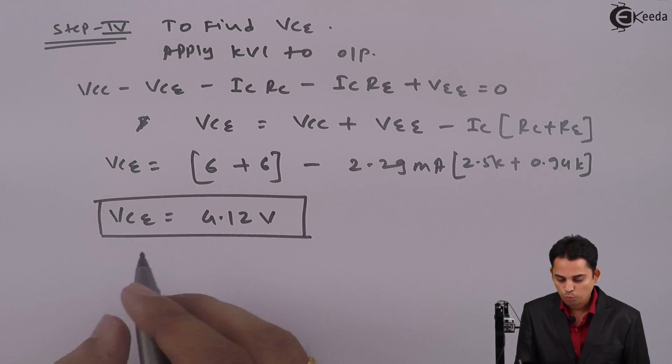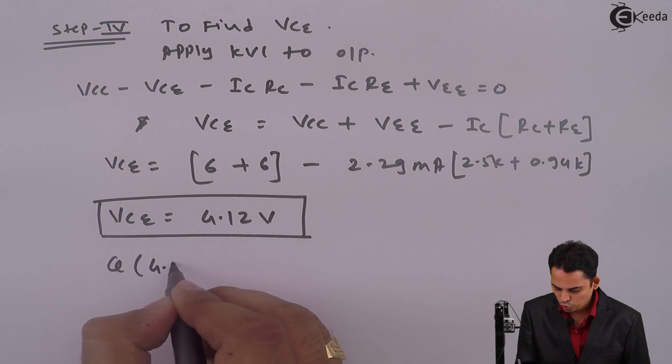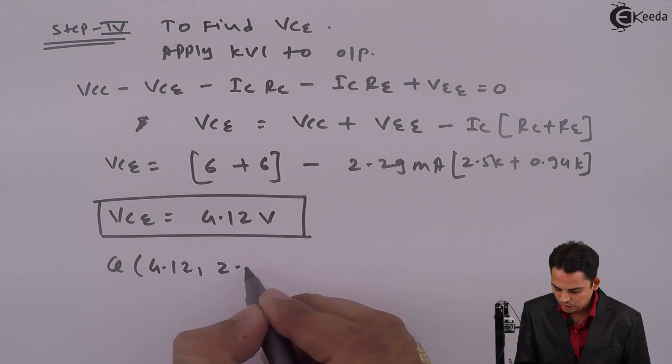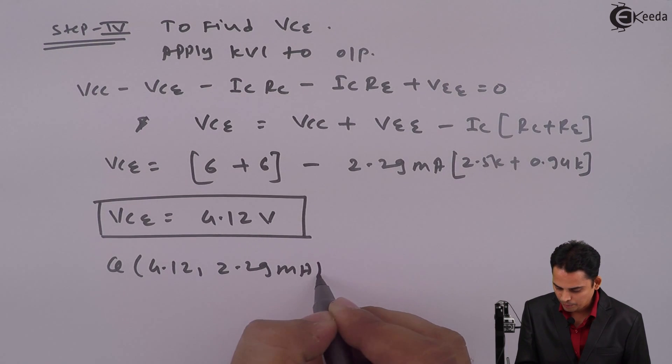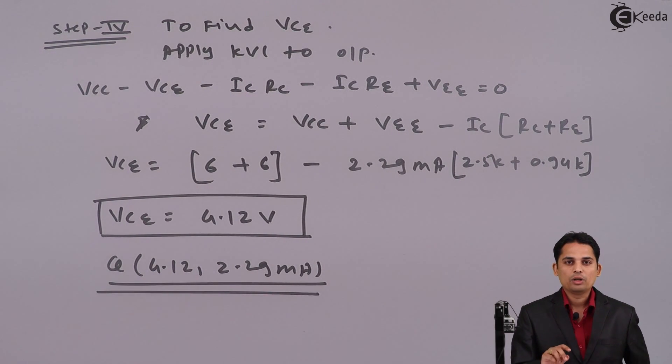Hence, Q point is 4.12 volts comma 2.29 milli amperes. This is how we can calculate Q point in voltage divider bias. Thank you.